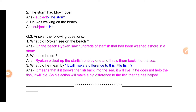Ryokan naam ka aadmi tha — usne dekha ki bahut saare starfish washed ashore ho gaye hain, samudra ke kinaare ja chuke hain. Mare hue starfish bahut saare samudra ke kinaare phaile hue hain. Usne kya kiya — Ryokan picked up the starfish one by one and threw them back into the sea. Ek ek karke starfish ko uthaya aur vaapas samudra mein phenk diya, so that if any are alive, they will survive.